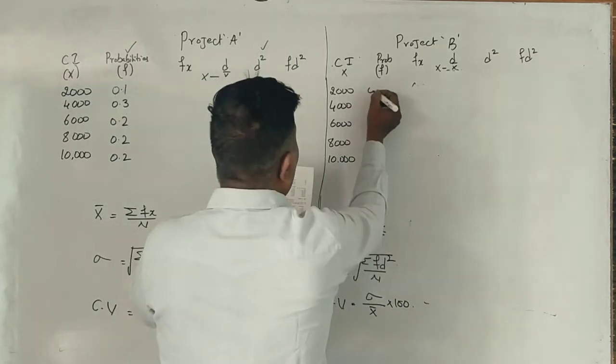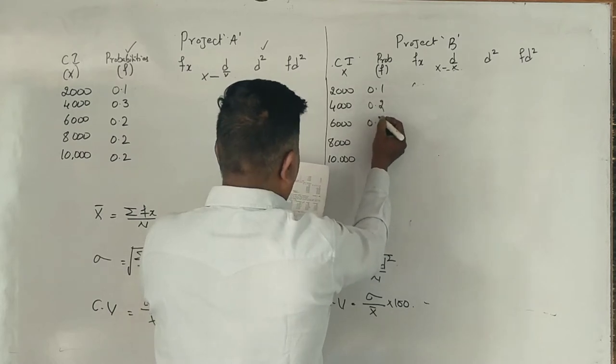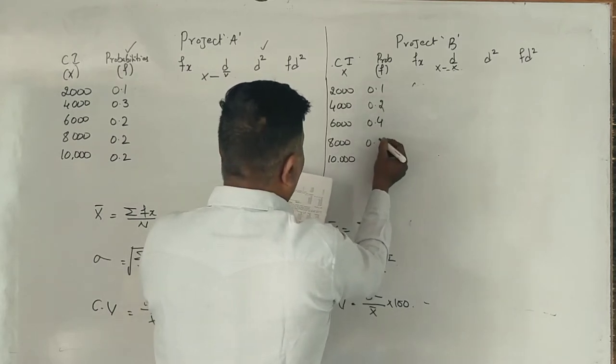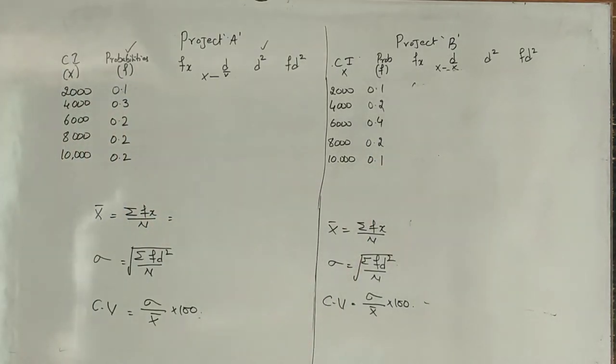Project B probabilities: 0.1, 0.2, 0.4, 0.2, 0.1. Correct?